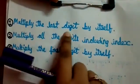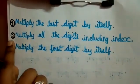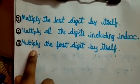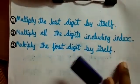Step 1: Multiply the last digit by itself. 2: Multiply all the digits including index. 3: Multiply the first digit by itself.